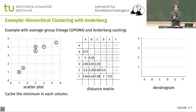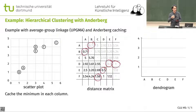The first thing we do in Anderberg is to find the minimum in each column. We can do it on the entire column. So we mark the smallest values. I've been working on columns, but it's a symmetric matrix. So that is my cache — I can just remember the position in the matrix, which is more useful than the actual number.